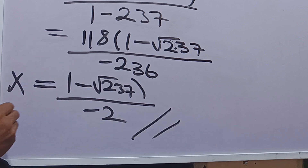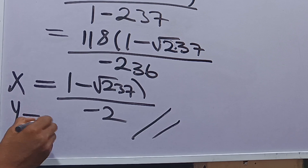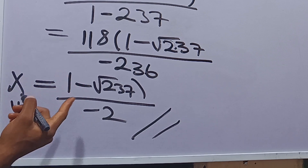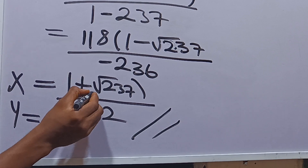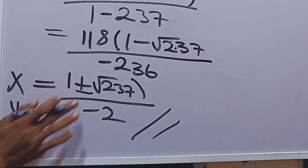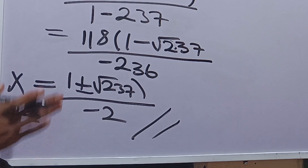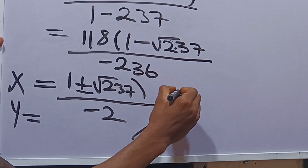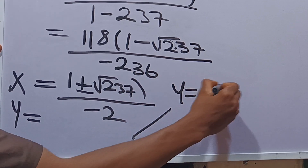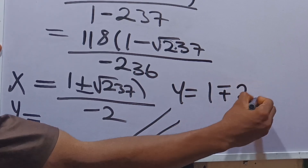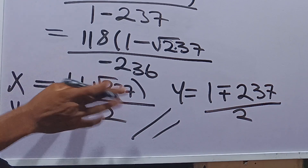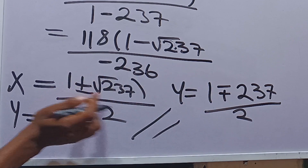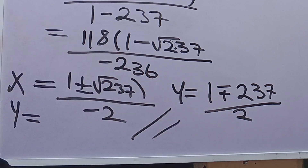So this is the value of x when y equals negative 1 plus root of 237 over 2. The value of x becomes negative 1 plus or minus root of 237 all over 2, and y equals negative 1 minus or plus root of 237 all over 2, because when it's plus for one variable it becomes minus for the other. This is the answer for this question.